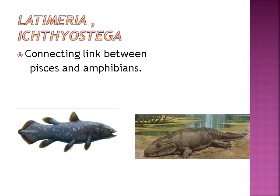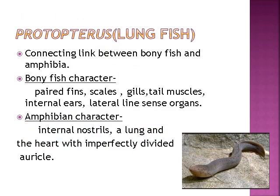Latimeria and Ichthyostega are the connecting links between Pisces and amphibians. Protopterus, also called the lungfish, is the connecting link between bony fish and Amphibia. Bony fish characters: paired fins, scales, gills, tail muscles, internal ears, lateral line sense organs. Amphibian characters: internal nostrils, a lung, and the heart with an imperfectly divided auricle.